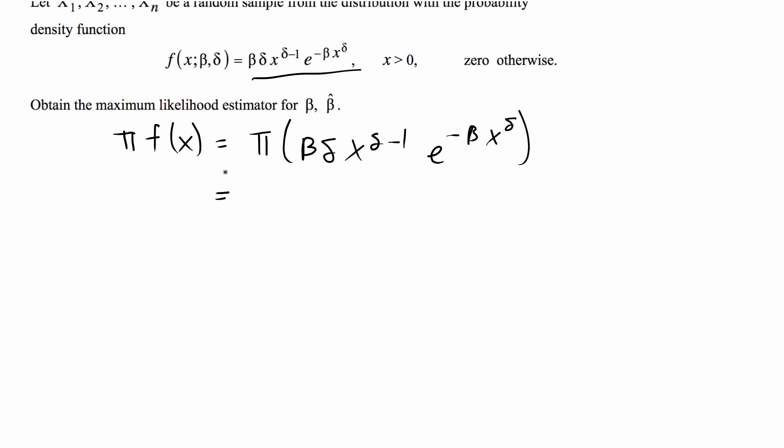Beta times beta times beta is going to be beta to the n. Same thing with the delta, so these constants are going to be just to the n. For this thing we're not going to be able to simplify it, so in parentheses I'm just going to put pi x delta minus 1.